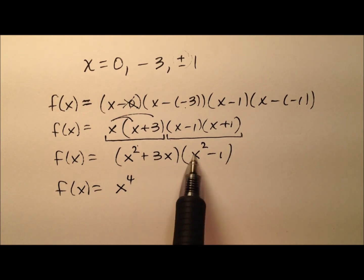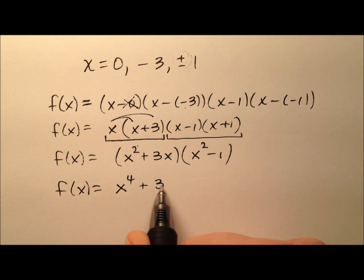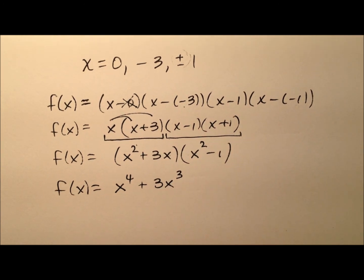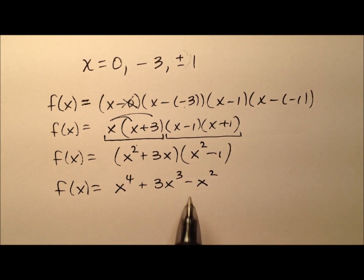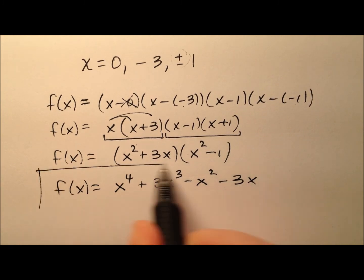and then here in the middle terms, I notice I have 3x times x squared. So let's do that now because that'll ultimately be an x cubed term, and then I have x squared times negative 1, so minus x squared, and then I have 3x times negative 1, which will be negative 3x.